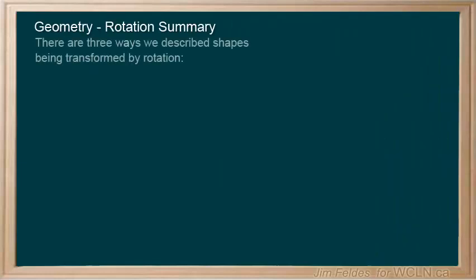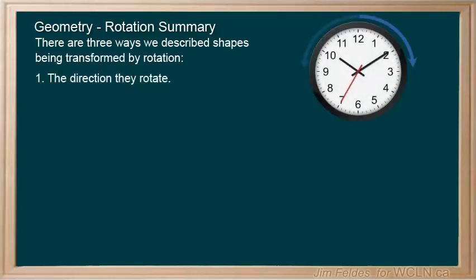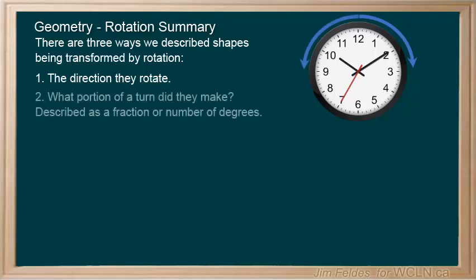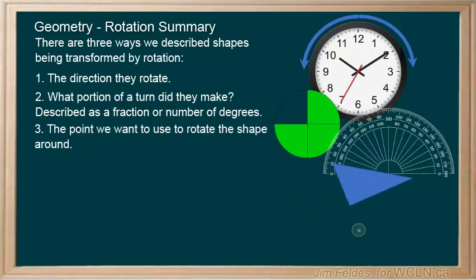There are three ways we describe shapes being transformed by rotation: the direction they rotate, clockwise or counterclockwise; what portion of a turn they make, described as a fraction or number of degrees; and the point we want to use to rotate the shape around, also called an axis.